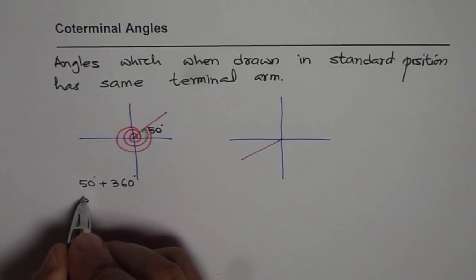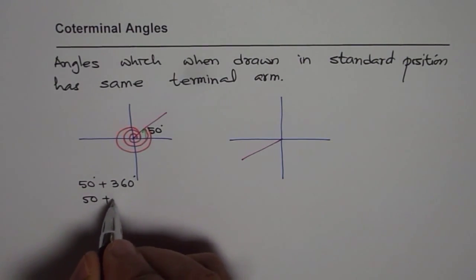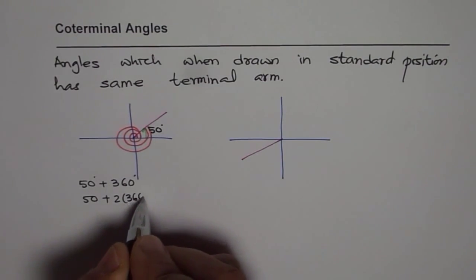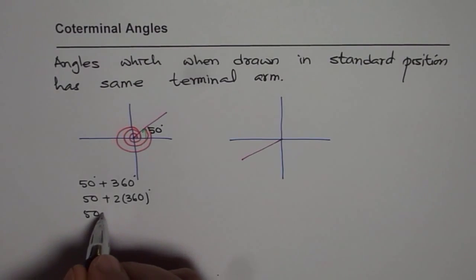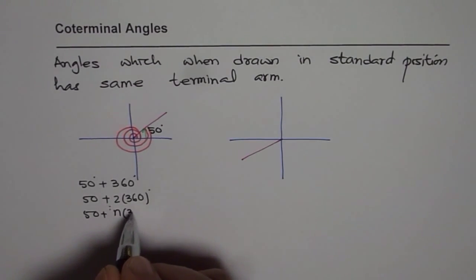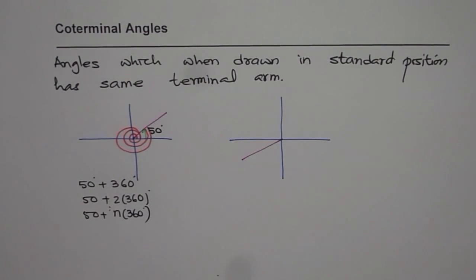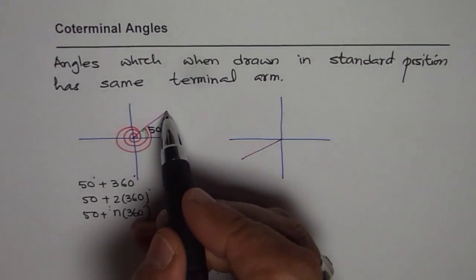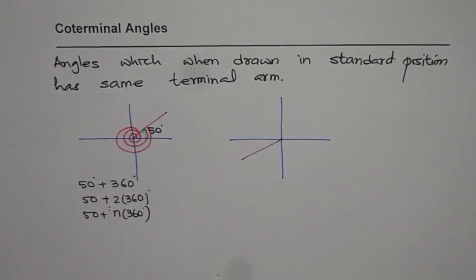Or it could be 50 plus 2 times 360 — two full circles. In general, 50 plus n times 360 degrees, for any integer n. All of these will terminate at the same position, and therefore they are called co-terminal angles.